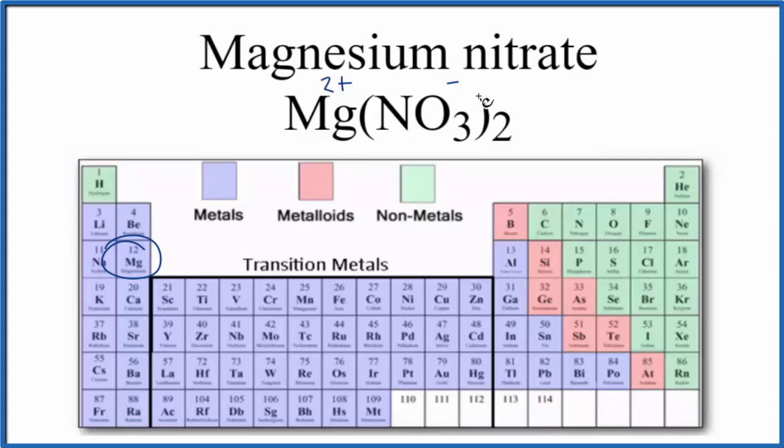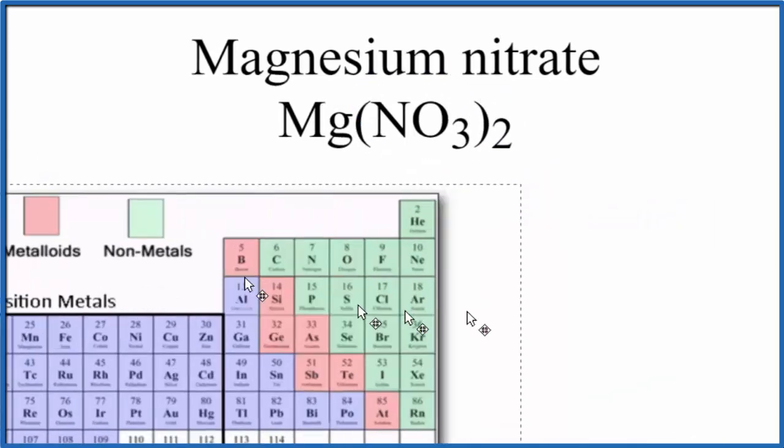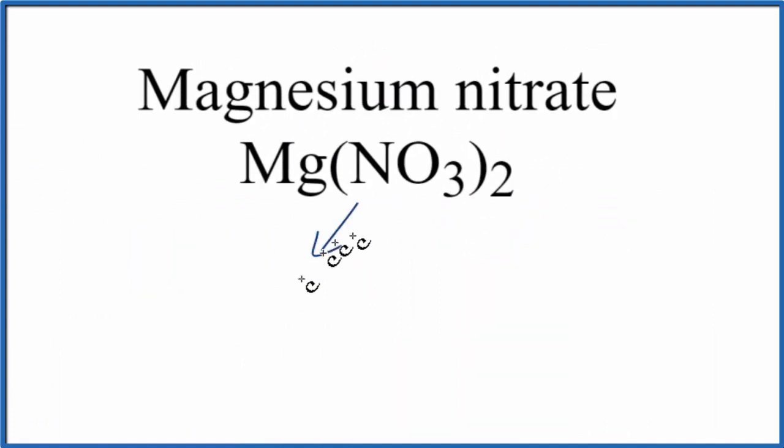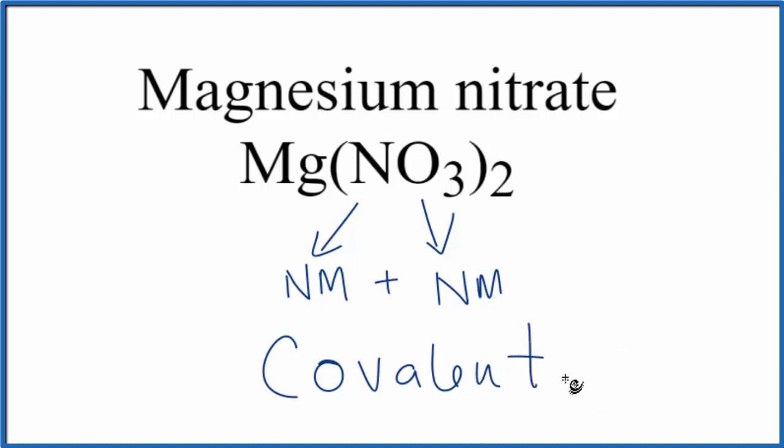Let's talk about the nitrate ion, though, just for a minute. So we said nitrogen, that's a nonmetal, and then oxygen, that's also a nonmetal. When we have a nonmetal plus a nonmetal, that forms covalent bonds. These are also called molecular bonds. So the entire compound, because we have a positive ion and negative ions, the entire compound's ionic. But this nitrate ion here, the bonds between the nitrogen and the oxygen atoms, that's covalent.